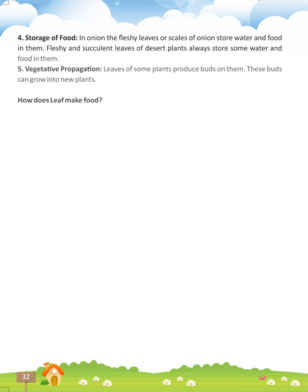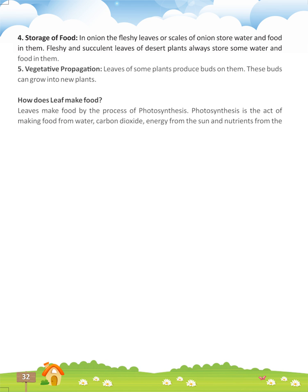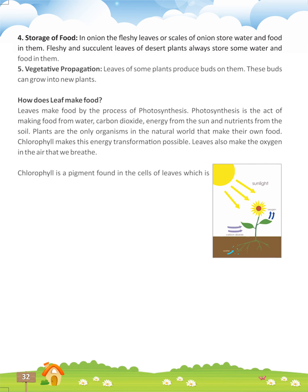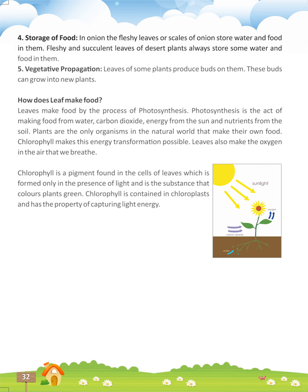How does a leaf make food? Leaves make food by the process of photosynthesis. Photosynthesis is the act of making food from water, carbon dioxide, energy from the sun, and nutrients from the soil. Plants are the only organisms in the natural world that make their own food. Chlorophyll makes this energy transformation possible. Leaves also make the energy in the air that we breathe. Chlorophyll is a pigment found in the cells of leaves, which is formed only in the presence of light and is the substance that colors plants green.